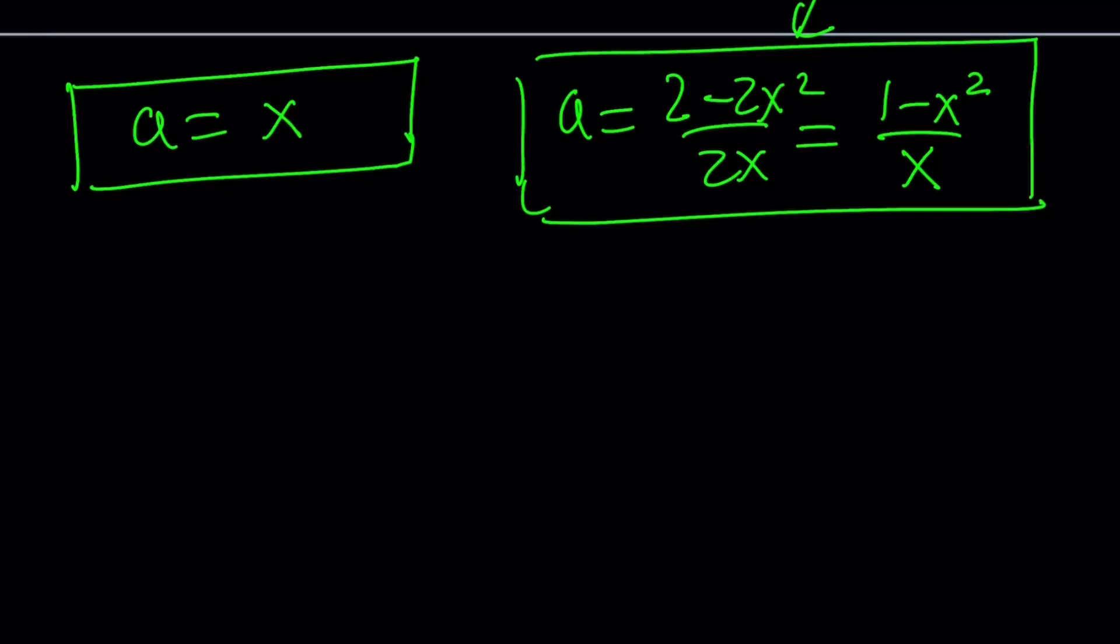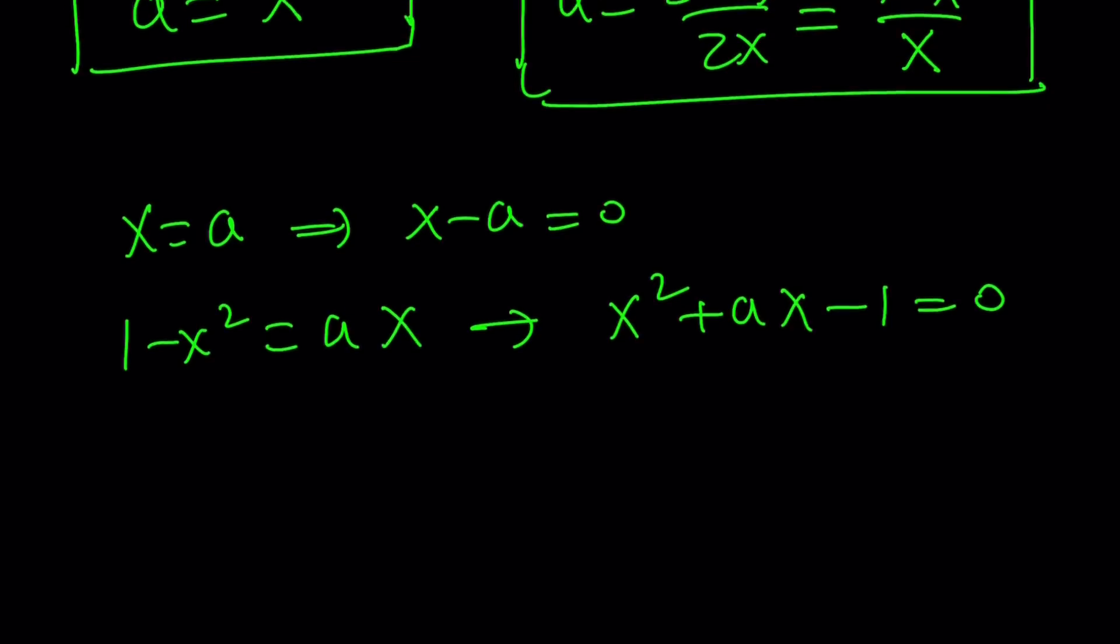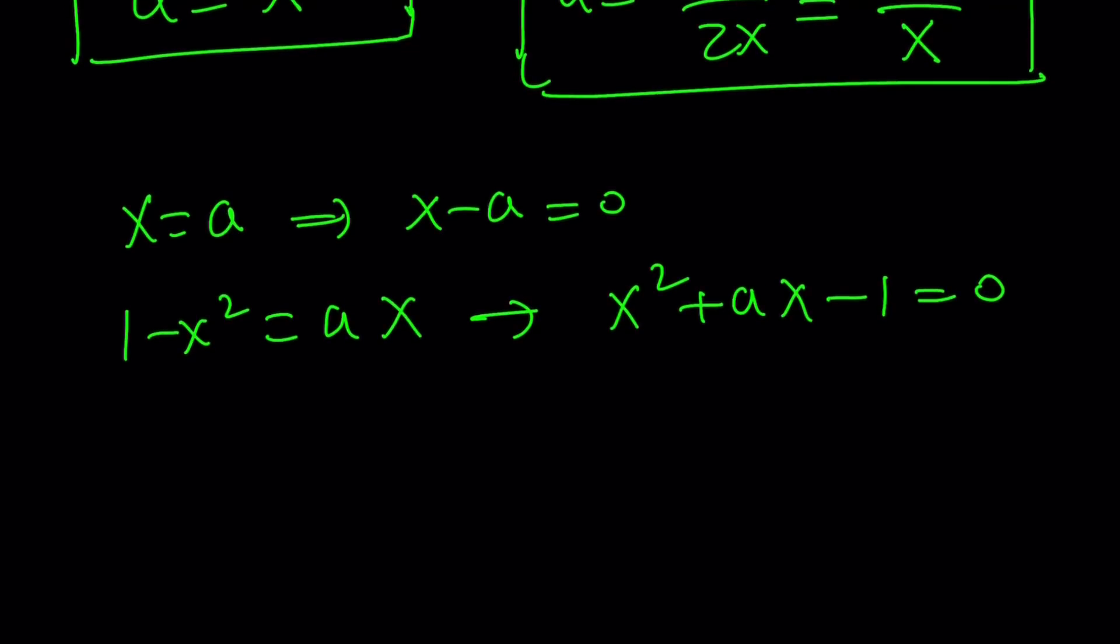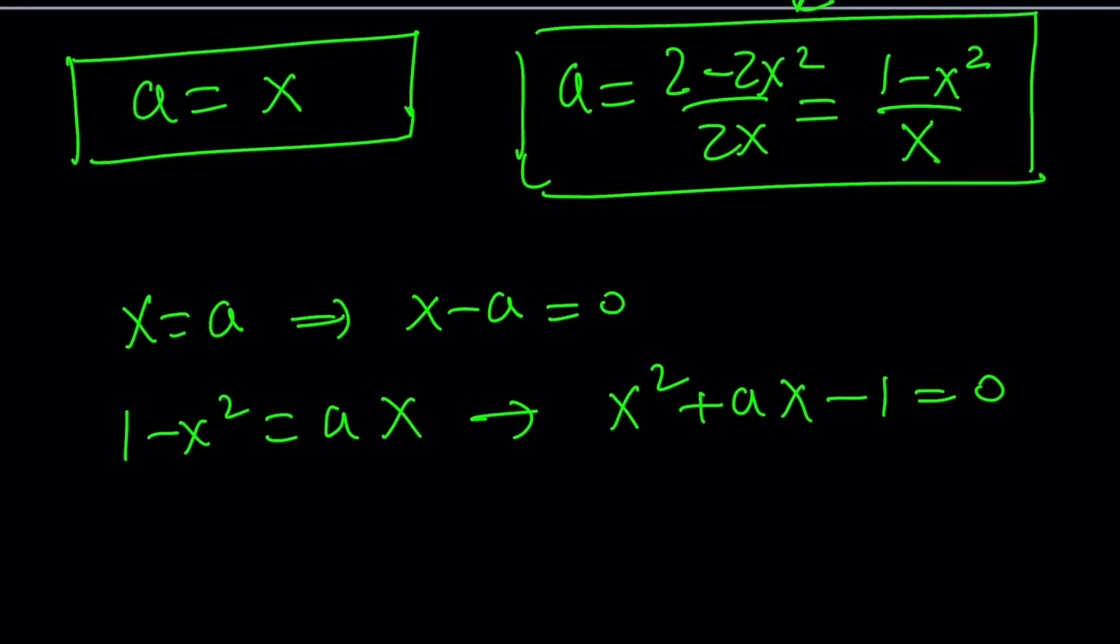Since a equals x is a root, that means x equals a is also a root, which means x minus a is a factor. And the second one, by using cross multiplication, we can write it this way and putting everything on the right-hand side: x squared plus ax minus 1 equals 0. So we basically get two solutions here, or two equations I should say. But we can go ahead and put those two together.